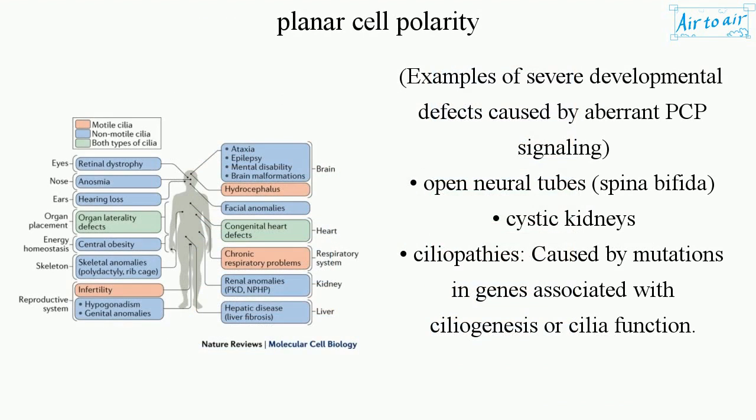Examples of severe developmental defects caused by aberrant PCP signaling include open neural tubes, spina bifida, cystic kidneys, and ciliopathy — caused by mutations in genes associated with ciliogenesis or cilia function.